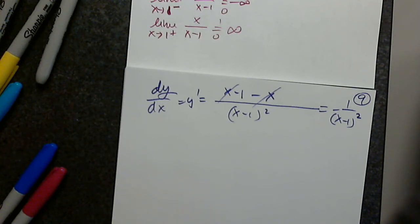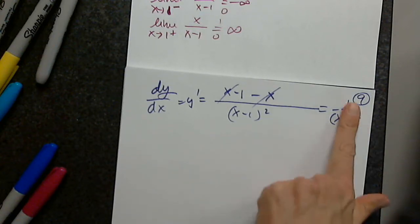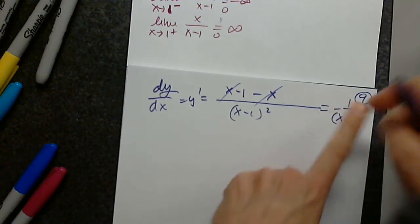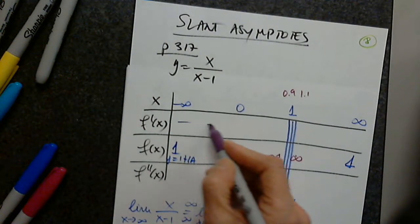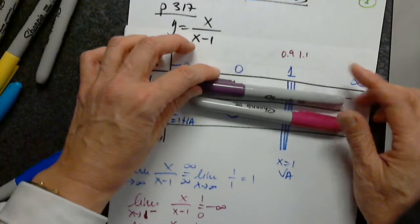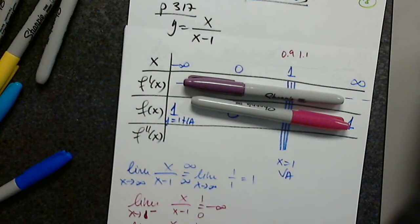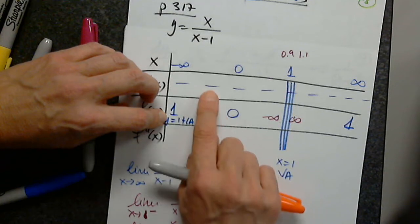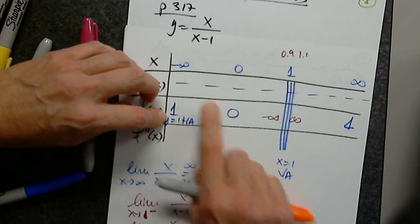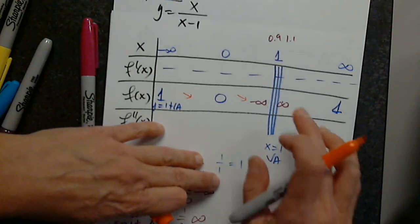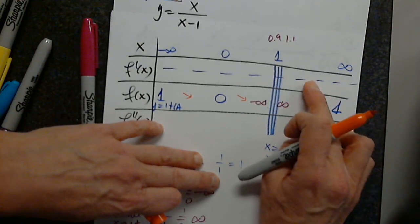No critical numbers, because x equals 1 could be a critical number but the function is not defined at 1, so it's not a critical number. What is the sign of the first derivative? Always negative — because x minus 1 squared is always positive, but there is a negative in front, so it's always negative. Now the moment of truth: from negative infinity to 0, what does the function do? Is that supported by the sign of the derivative? Yes. From 0 to negative infinity? Yes. From infinity to 1? Yes — perfect.